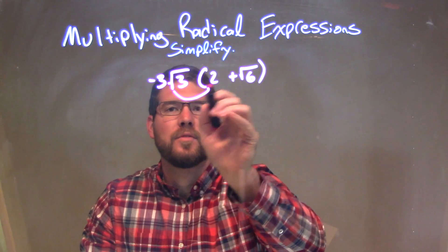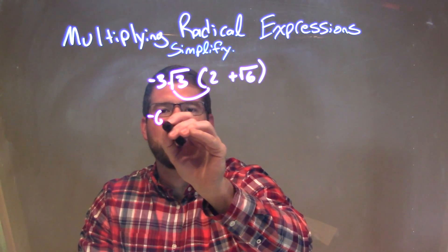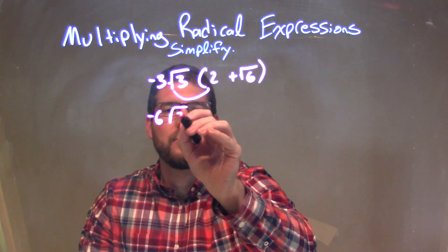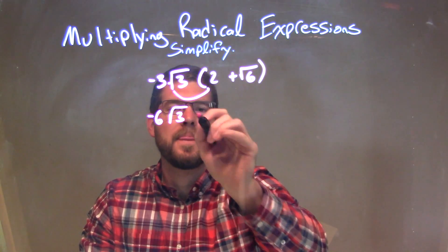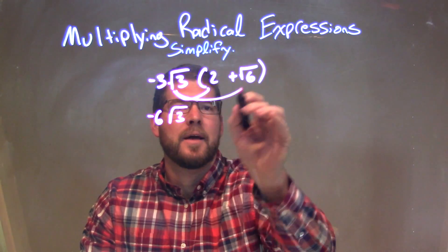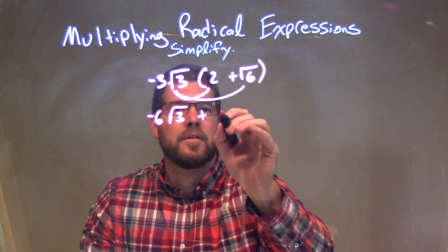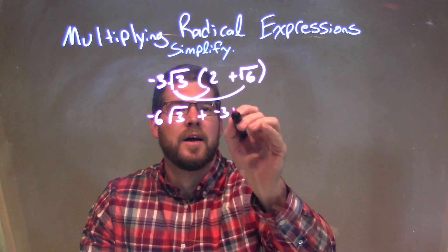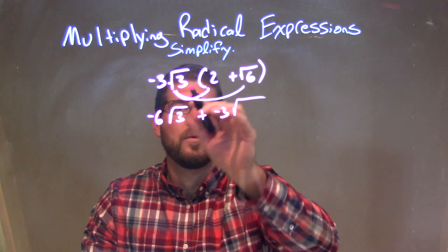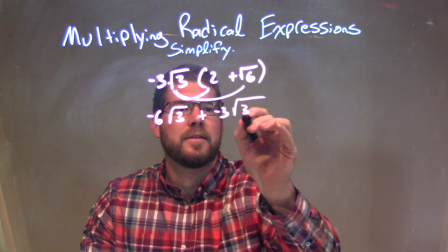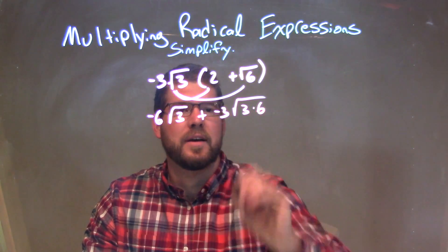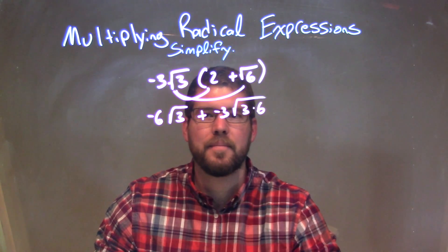So negative 3 times 2 is negative 6 times the square root of 3 right there. Then we do it again: plus the negative 3 stays on the outside, and under the square root we just have the 3 times the 6.